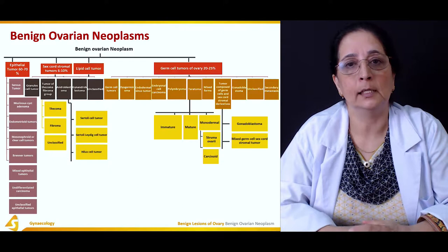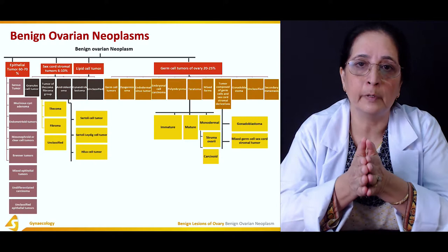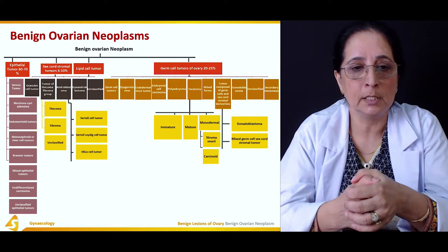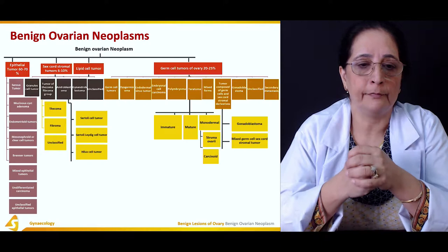Epithelial tumors are the most common ovarian tumors, comprising serous type, mucinous cyst adenomas, endometrioid, mesonephroid or clear cell tumors, and Brenner tumors.